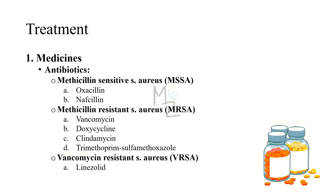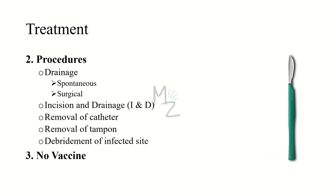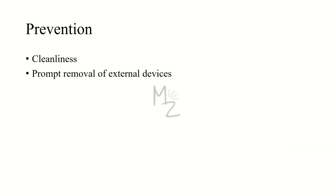Treatment — antibiotics: for methicillin-sensitive Staphylococcus aureus (MSSA), we use oxacillin and nafcillin. For methicillin-resistant S. aureus (MRSA), we use vancomycin, doxycycline, clindamycin, and trimethoprim-sulfamethoxazole. For vancomycin-resistant S. aureus (VRSA), we use linezolid. Procedures include spontaneous or surgical drainage — incision and drainage for boils. Removal of catheters and tampons is important. Debridement of infected sites can also help. There is no vaccine because the membrane of S. aureus is fully immunogenic.